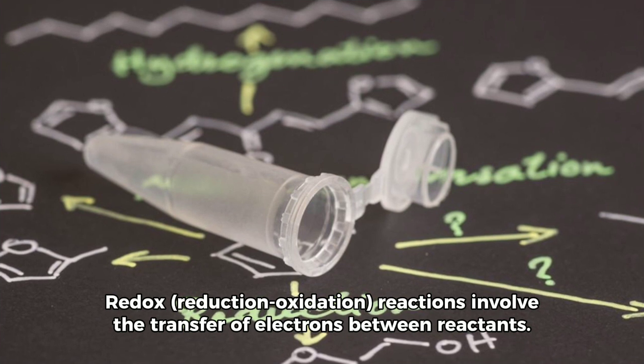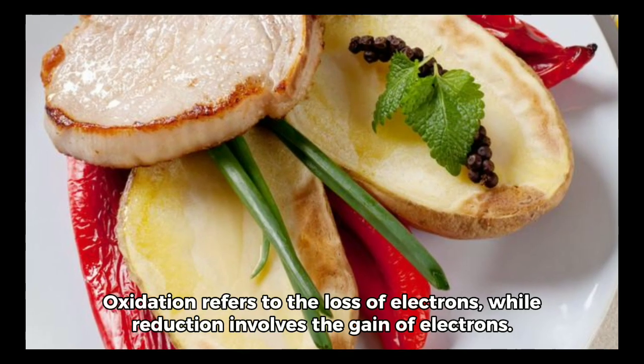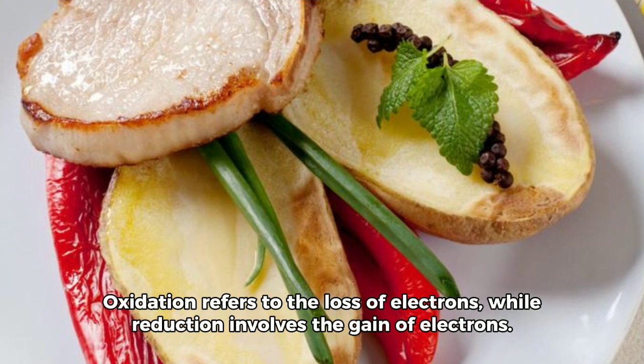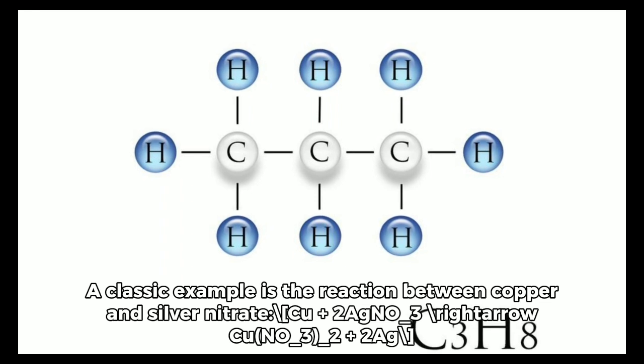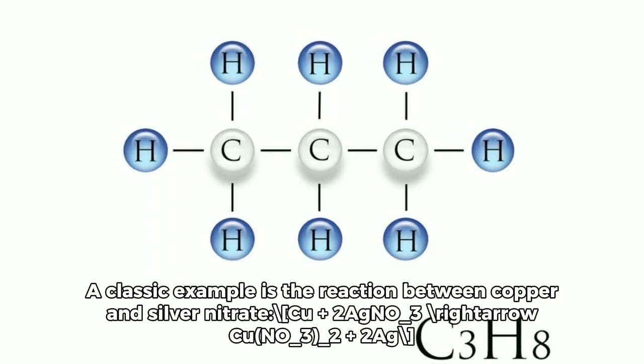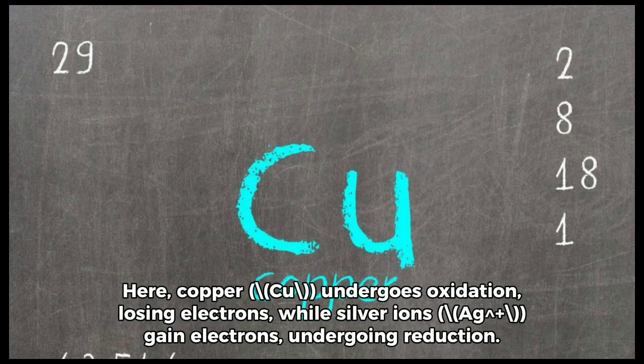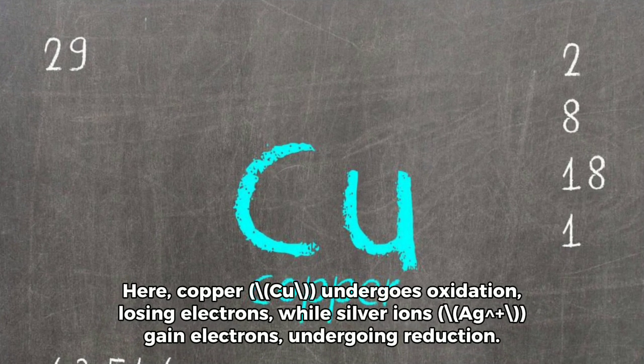Redox (reduction-oxidation) reactions involve the transfer of electrons between reactants. Oxidation refers to the loss of electrons, while reduction involves the gain of electrons. A classic example is the reaction between copper and silver nitrate: Cu + 2AgNO₃ → Cu(NO₃)₂ + 2Ag. Here, copper (Cu) undergoes oxidation, losing electrons, while silver ions (Ag⁺) gain electrons, undergoing reduction.